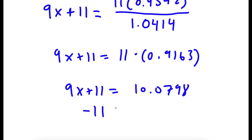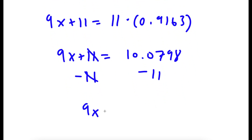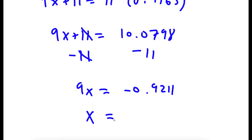Now 0.9542 over 1.0414 equals 0.9163, so this is 11 times 0.9163, which equals 10.0789. So I have 9x plus 11 equals 10.0789. Subtracting 11 gives 9x is equal to negative 0.9211, meaning x is equal to negative 0.1023.